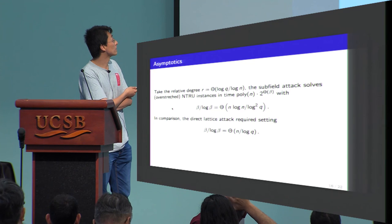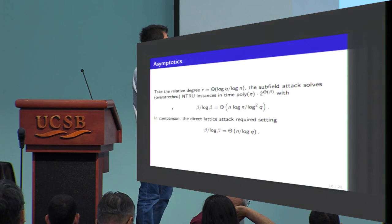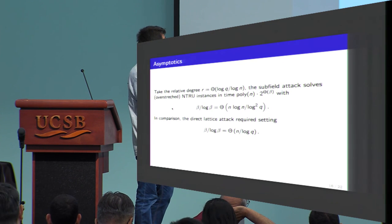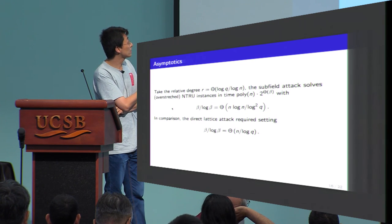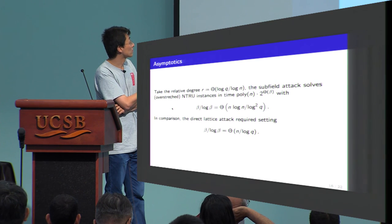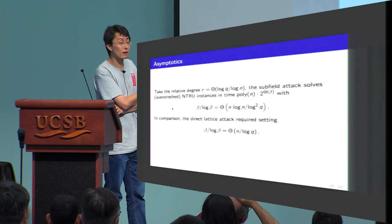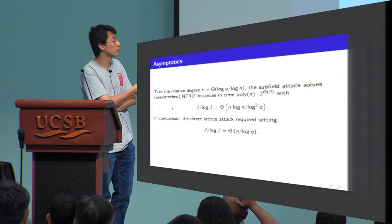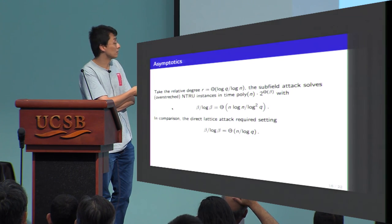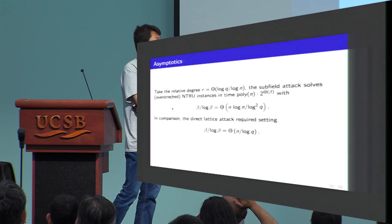For the asymptotics of this attack, we take the relative degree R to be log Q divided by log N. This value is set to minimize the block size beta divided by log beta. The subfield lattice attack can solve the over-stretched NTRU assumption in time 2^(theta*beta), with block size beta such that beta divided by log beta is asymptotically N times log N divided by (log Q)^2. By comparison, the direct lattice attack on the full field gives beta divided by log beta equal to N divided by log Q. Therefore this attack is better as soon as Q is super-polynomial.